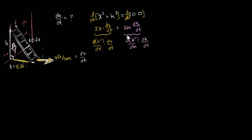This gives us the derivative of h² with respect to time. And on the right-hand side of the equation, the length of our ladder isn't changing — this 100 doesn't change with respect to time — so the derivative of a constant is just 0. So now we have a relationship between the rate of change of h with respect to time, the rate of change of x with respect to time, and at a given point in time, the values of x and h.